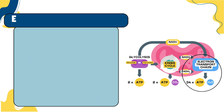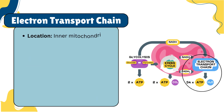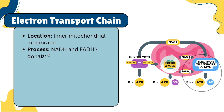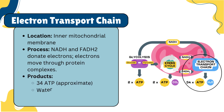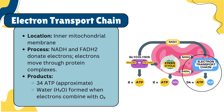The final stage is the electron transport chain, which occurs in the inner mitochondrial membrane. Here, the electrons carried by NADH and FADH2 are passed through a series of protein complexes, ultimately combining with oxygen to form water. This process is crucial for producing approximately 34 ATP through oxidative phosphorylation.